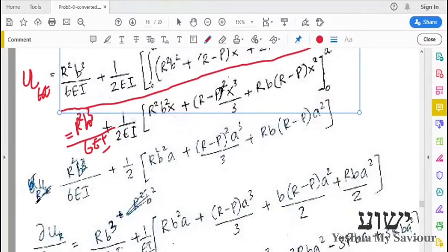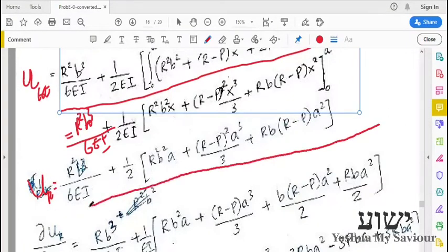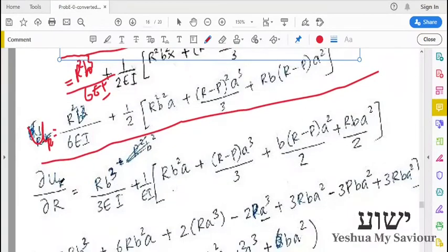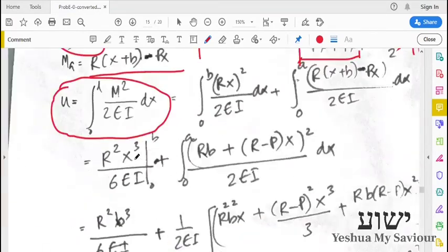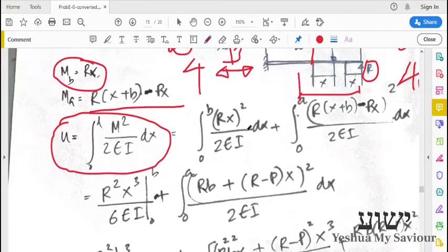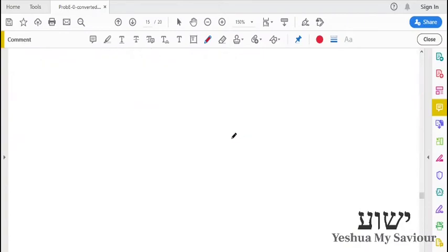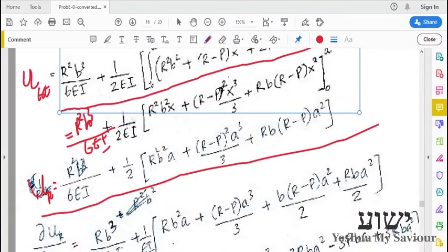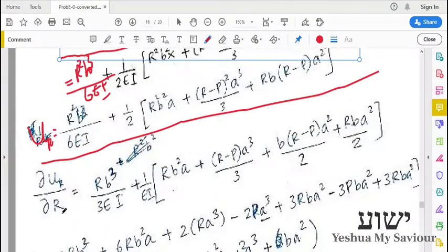Next we have to find the deflection at point R. Obviously, point R is fixed, so there should be no deflection. We try to find the deflection at point R, then we will set it to zero, thus updating R.